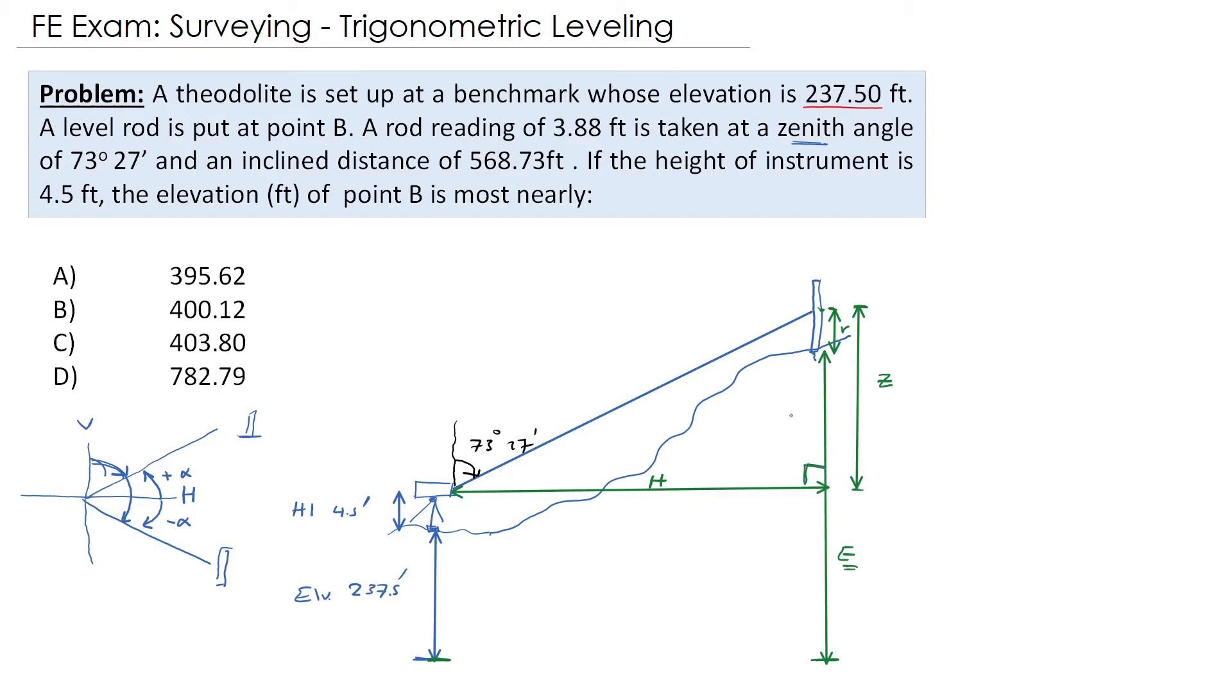So here we have a right triangle. This is 90 degrees in here and we will have a similar triangle here. This distance is also z, the difference in elevation.